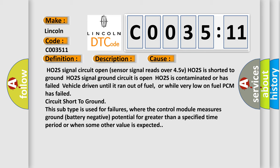or while very low on fuel, PCM has failed, circuit short to ground. This subtype is used for failures where the control module measures ground battery negative potential for greater than a specified time period or when some other value is expected.